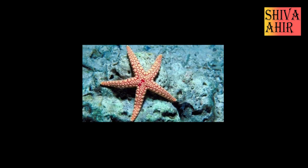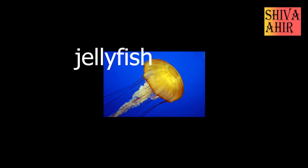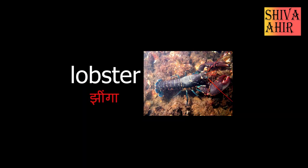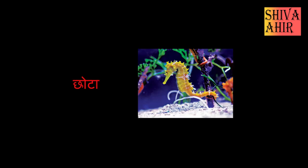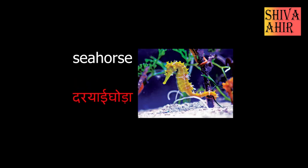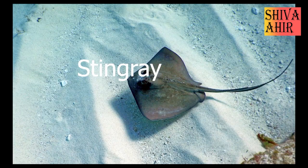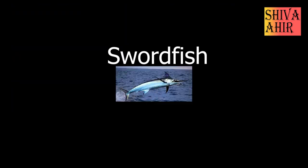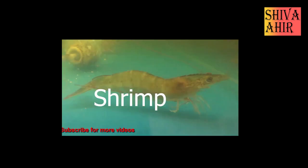Starfish — Taharami. Jellyfish. Lobster — Jhinga. Seahorse — Chota Dariyai Ghoda. Stingray. Swordfish — Talwar Musli. Shrimp — Jhinga.